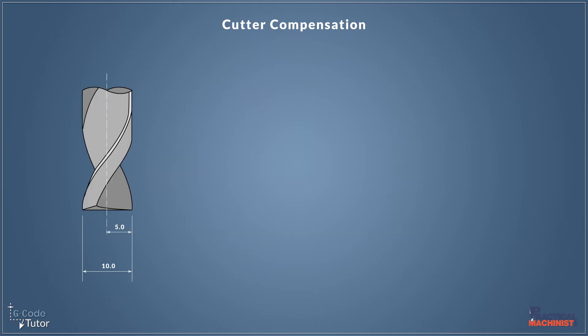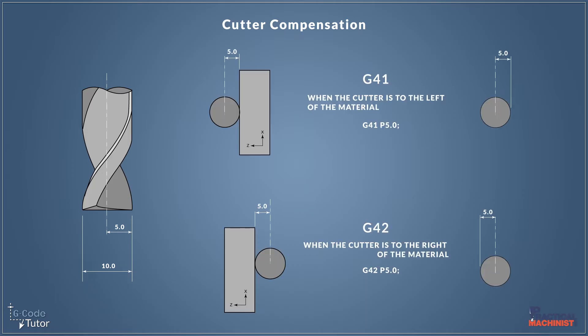For Cutter Compensation to be able to work, the machine needs to know the diameter of our tool. So if we're using a 10mm diameter tool, we would offset it by 5mm — the radius of our tool. But the machine can work this out, and this is how.